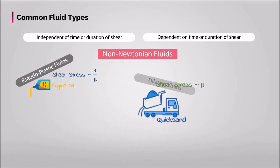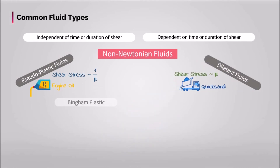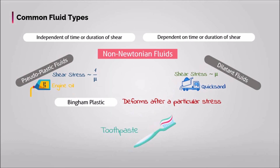Then, Bingham plastic is the fluid that appears solid up to a particular stress, and after increasing the stress further, there will be shear deformation. Toothpaste is an example of this.